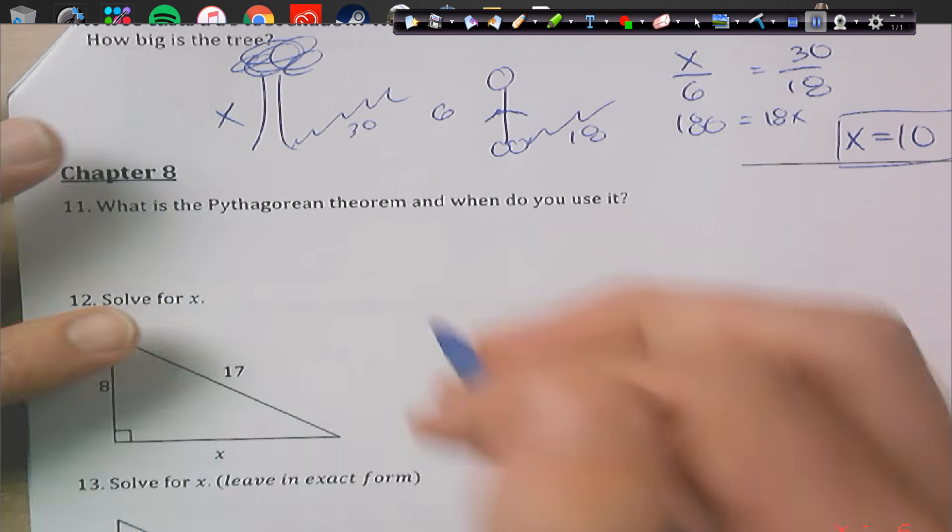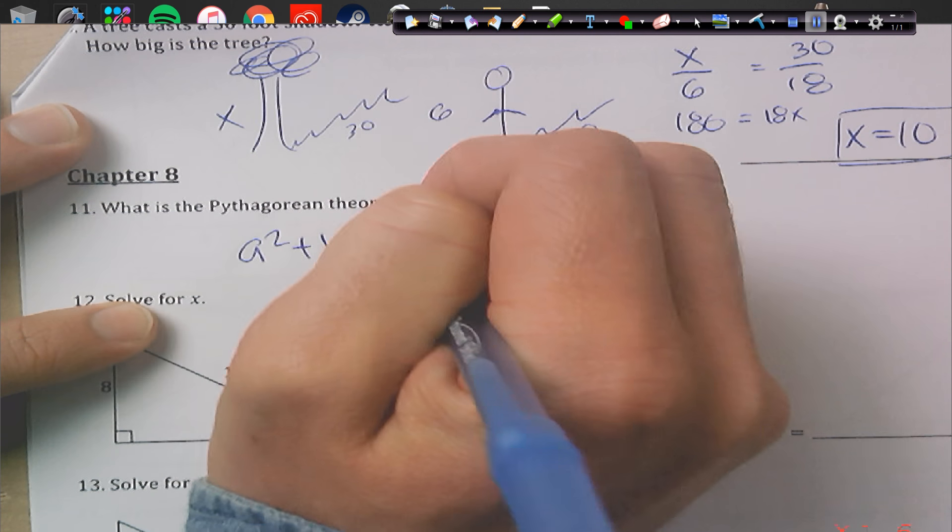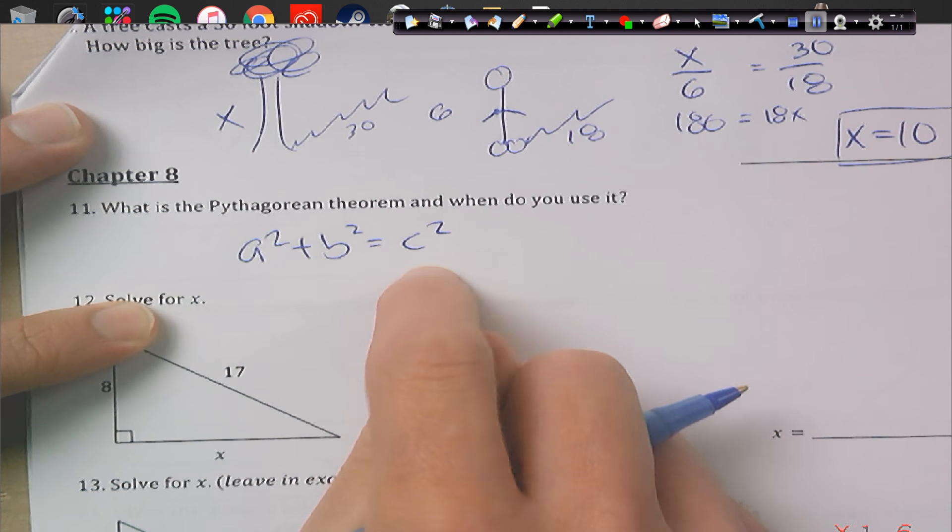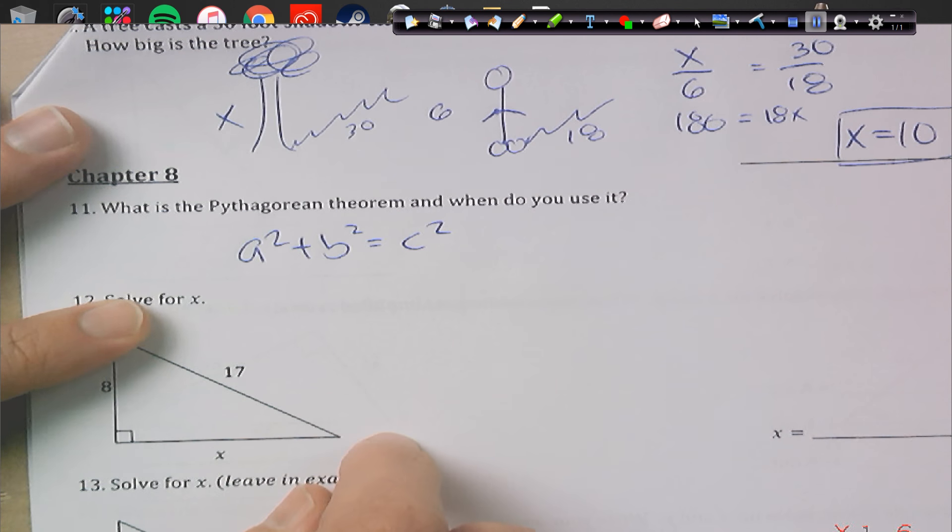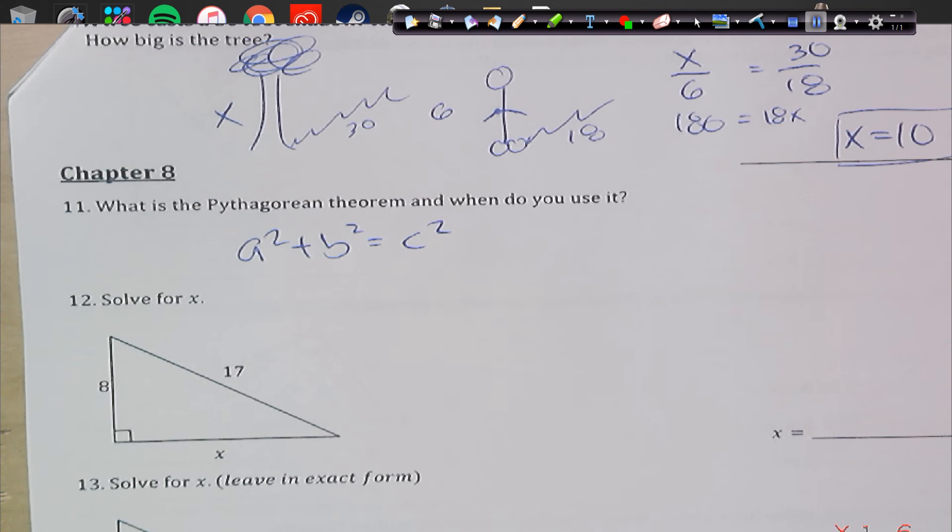Alright. What is Pythagorean Theorem? a squared plus b squared equals c squared. C is a hypotenuse. It is the longest side. When do you use it? When you're finding sides of a right triangle.